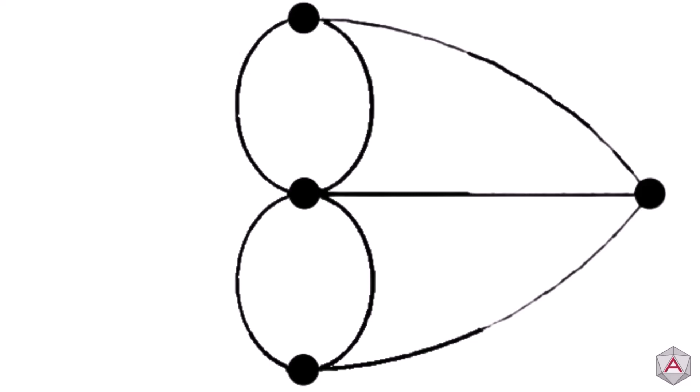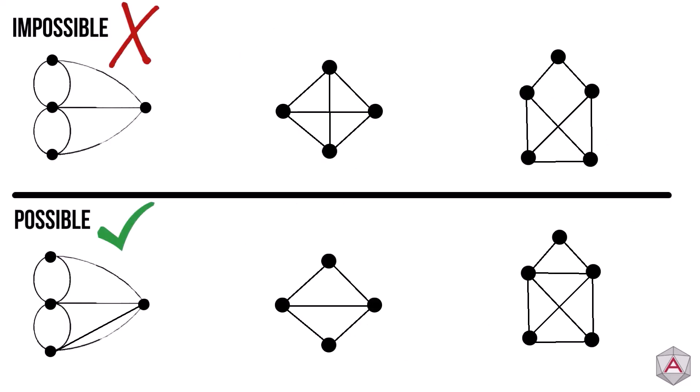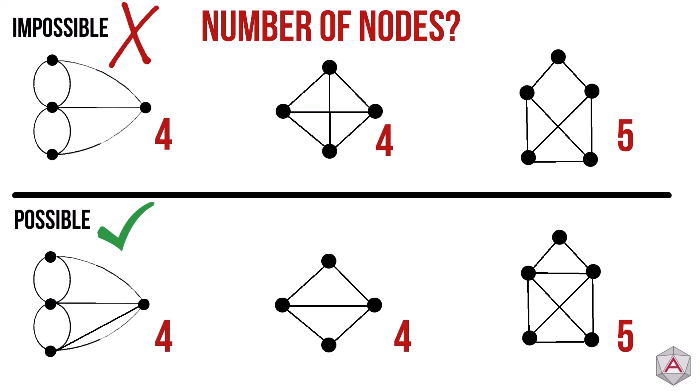Let's compare graphs that don't have an Euler path to graphs that do. Can you spot a pattern between them? You may initially think it has to do with the number of nodes, but as you can see both sides have the same numbers.